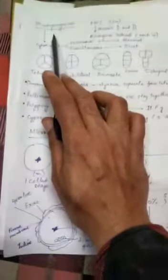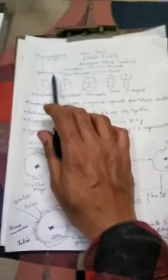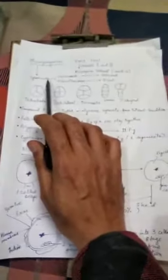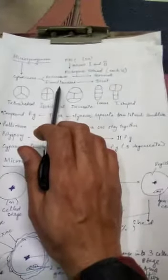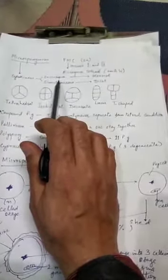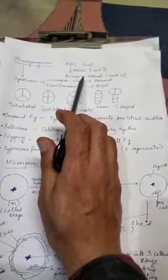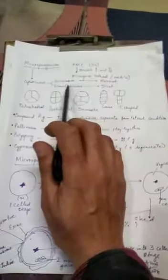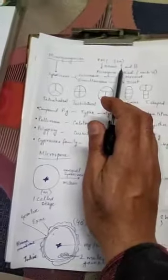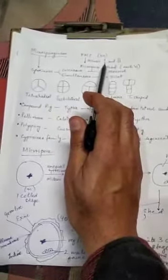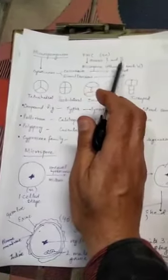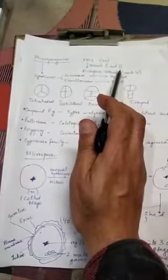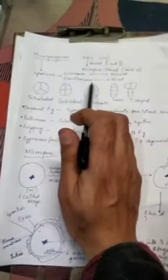Now microsporogenesis involves karyokinesis followed by cytokinesis. The cytokinesis involved can be either successive or it can be simultaneous. If it is successive, every meiotic division or karyokinesis will be followed by cytokinesis. So it is most common among monocots. And simultaneous, when meiosis first is not followed by cytokinesis but the cytokinesis of these two products are going to take place simultaneously. So it is called simultaneous cytokinesis. It is most common in dicots.